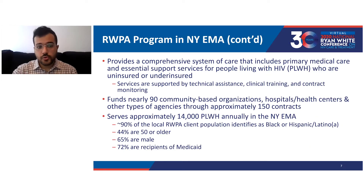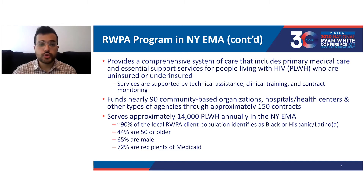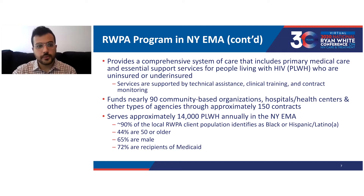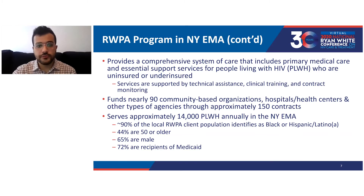The Ryan White Part A program provides a comprehensive system of care that includes primary medical care and essential support services for people living with HIV who are uninsured or underinsured. These services are supported by technical assistance, clinical training, and contract monitoring. The program funds nearly 90 community-based organizations, hospitals and health centers, and other types of agencies through approximately 150 contracts, serving approximately 14,000 people living with HIV annually in the New York EMA.